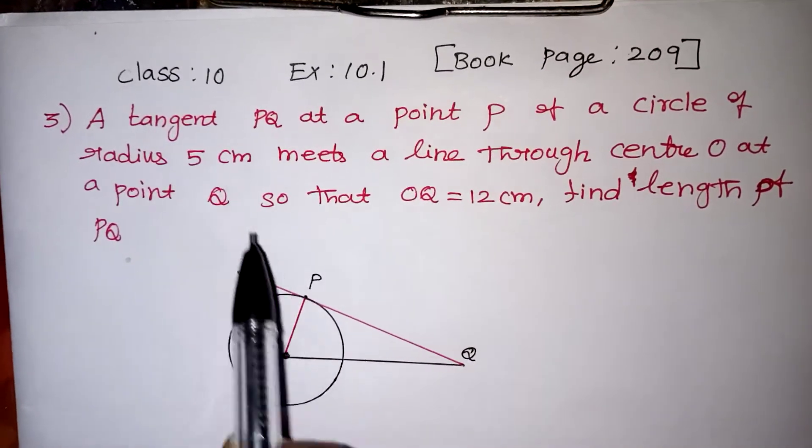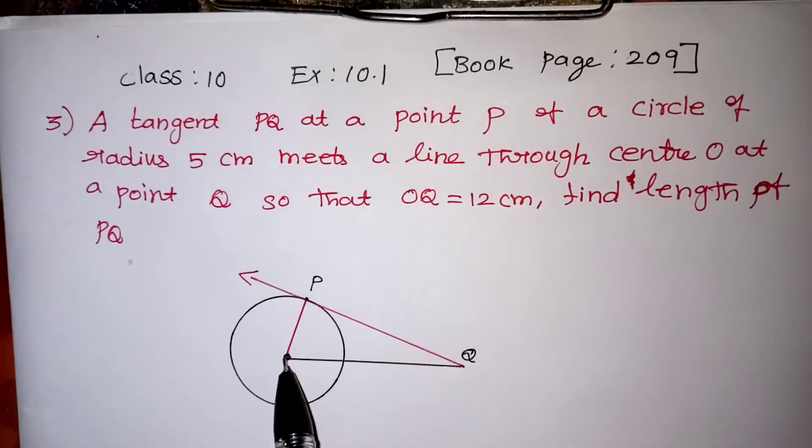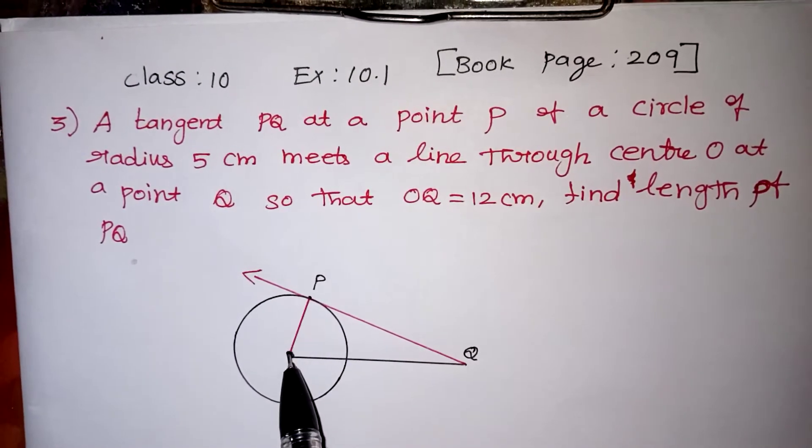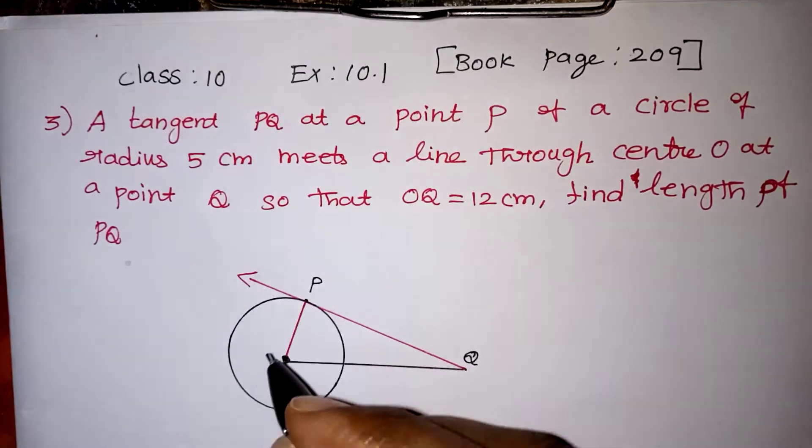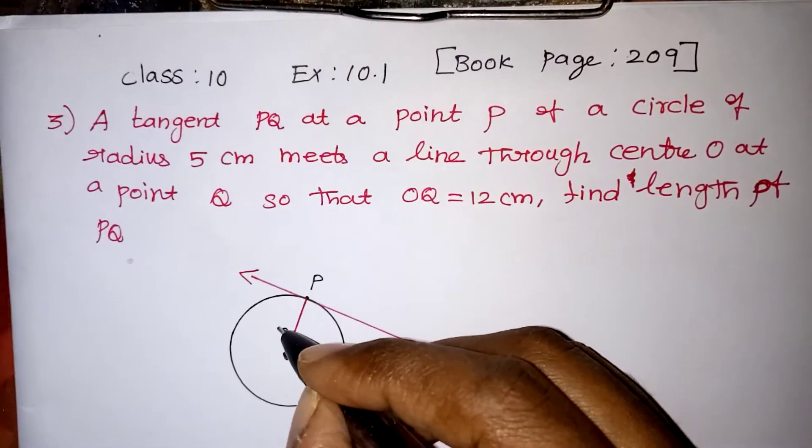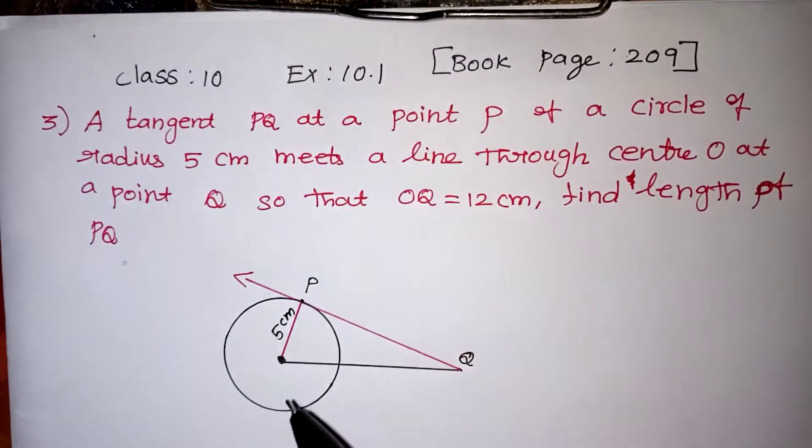The next line, radius is 5 centimeters. Radius is a line which connects the circle center and the circumference. So this is actually 5 centimeters. Radius is 5 centimeters given.